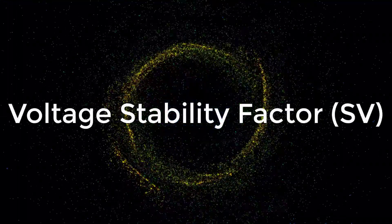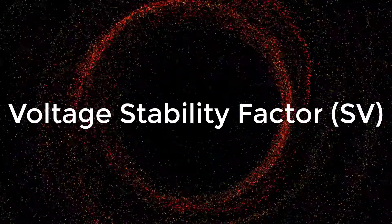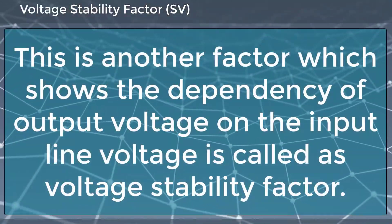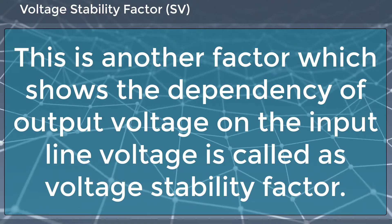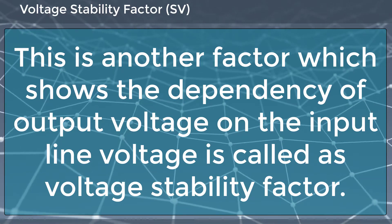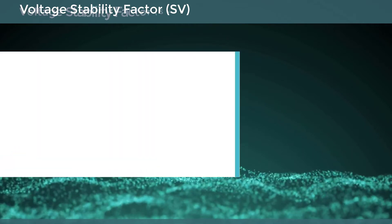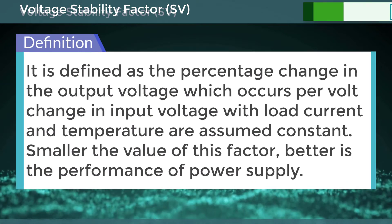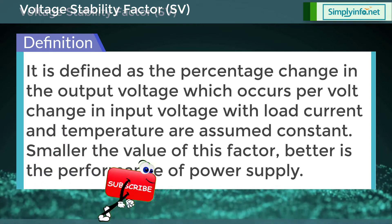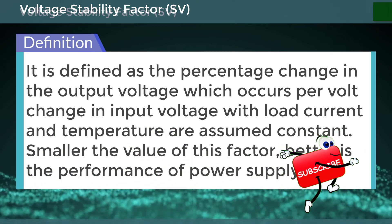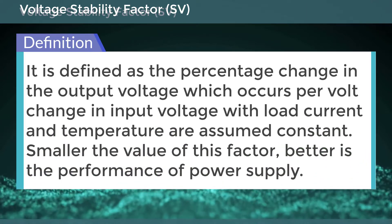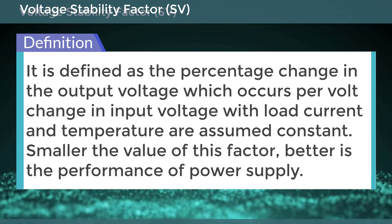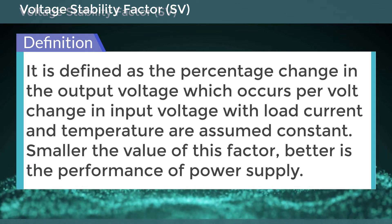Now what is the voltage stability factor, otherwise known as SV? This is a factor which shows the dependency of output voltage on the input line voltage. It is defined as the percentage change in output voltage which occurs per volt change in input voltage, with load current and temperature assumed constant. Smaller the value of this factor, better is the performance of the power supply.